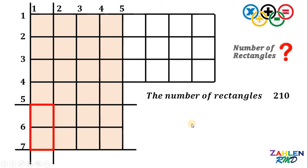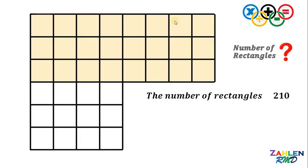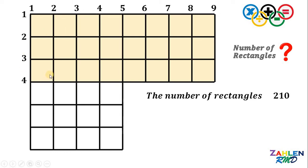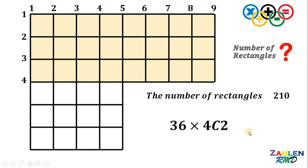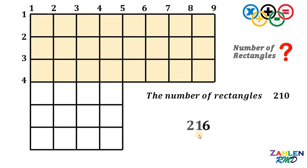Now let's find the total number of rectangles in the second colored grid. We count the vertical and horizontal lines and choose two of each. This grid has nine vertical lines and four horizontal lines. So the total equals 9 choose 2 times 4 choose 2. Nine choose two gives thirty-six, and four choose two gives six. So we have thirty-six times six, which equals 216 rectangles.